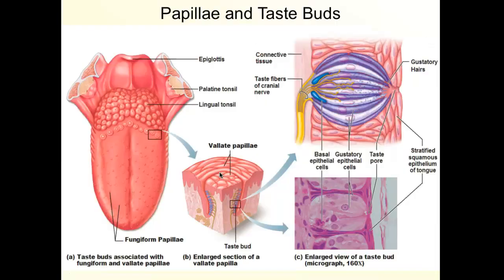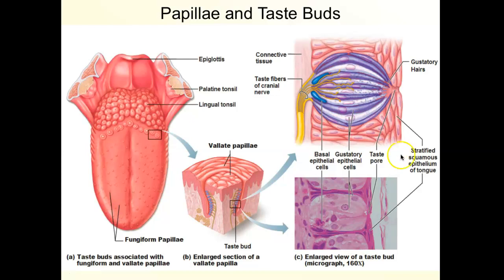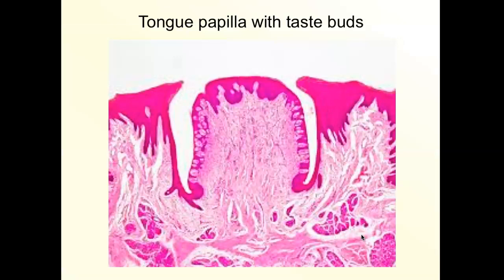Now let's look at the taste bud. A taste bud has a mix of cells: gustatory epithelial cells — the actual tasting cells — connected to nerve endings, plus basal cells and support cells. The gustatory cells have hairs on the end to increase surface area and contact the chemicals in food. This is what a taste bud looks like on the tongue, and the tongue is another histology slide you need to know.